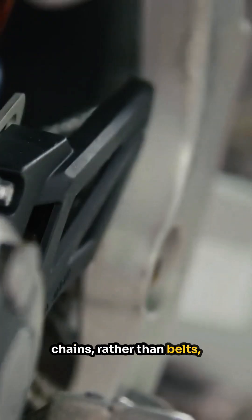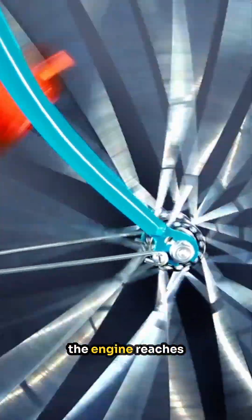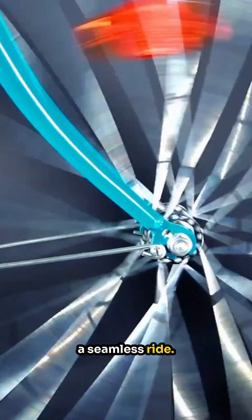This is why you'll find chains rather than belts on motorcycles and bicycles where efficiency and reliability are crucial. Chains ensure the power from the pedaling or the engine reaches the wheels effectively, providing you with a seamless ride.